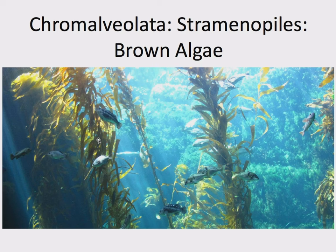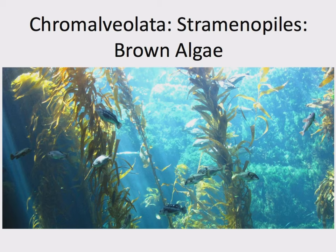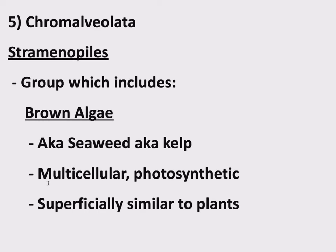Evolutionarily, however, the way it does photosynthesis and everything — it's not a plant. This is another example of convergent evolution. If you're doing photosynthesis and you're a multicellular organism, having this flat blade-like structure, a quote-unquote leaf, is just a really good way to capture sunlight. Plants evolved leaves because it's a good way to do it, and independently, these brown algae have a very similar body form because it's a good way to do photosynthesis. Brown algae, also known as seaweed or kelp, are photosynthetic and multicellular — one of the rare multicellular protists — and superficially similar to plants.